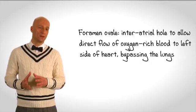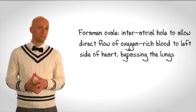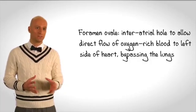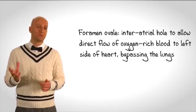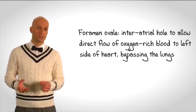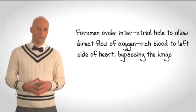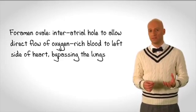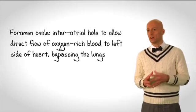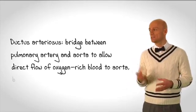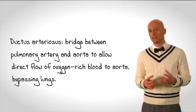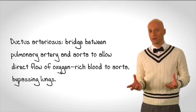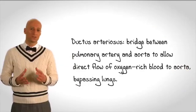Blood is directed from the right atrium into the left atrium — and remember, this is oxygenated blood. Once it's in the left atrium, it then passes through the left ventricle and then through the aorta and then to the body of the fetus. A small amount of blood remains in the right atrium and is pumped into the right ventricle and then out of the heart into the pulmonary artery. Because the pulmonary vasculature is undeveloped, there's a high resistance to the flow of blood through it. There is a connection between the pulmonary artery and the aorta called the ductus arteriosus, which allows oxygen-rich blood to pass from the pulmonary artery directly into the aorta without going through the lungs.